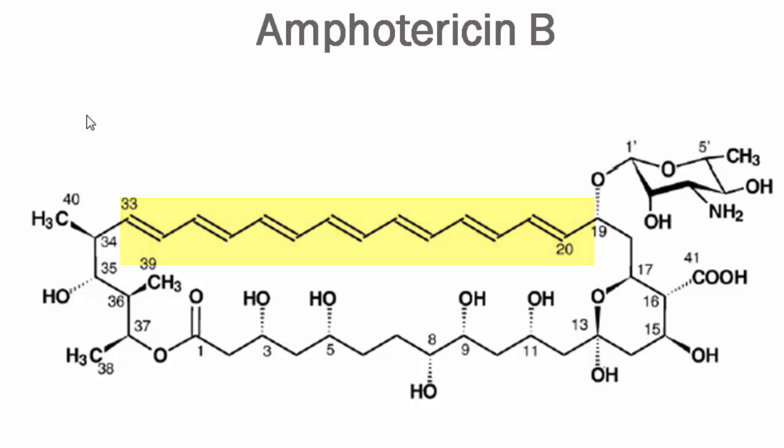This polyene antibiotic binds to the ergosterol of the fungal plasma membrane. The fungal plasma membrane is made up of a sterol called ergosterol. Ergosterol is very similar to cholesterol, which I will explain in the next slide. Amphotericin B binds to the ergosterol and then makes water pores.